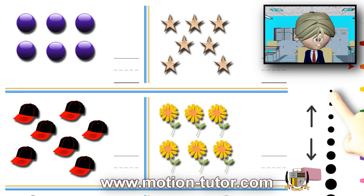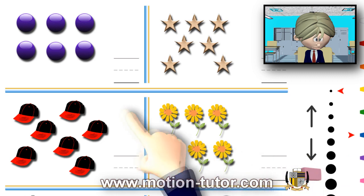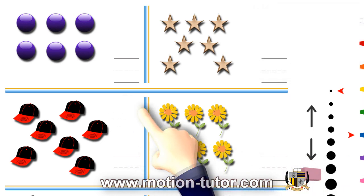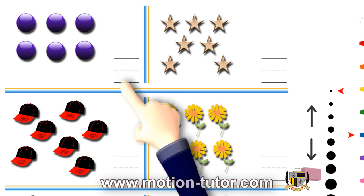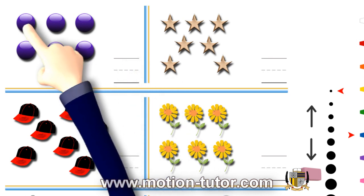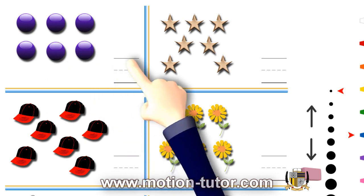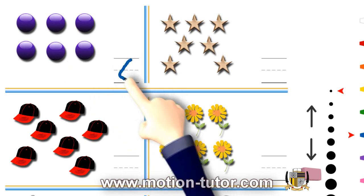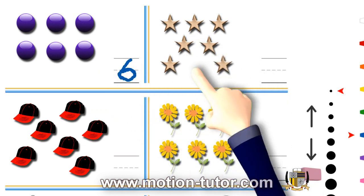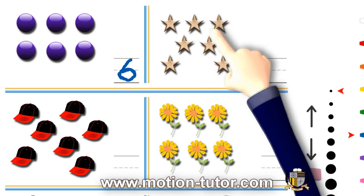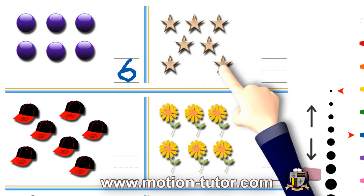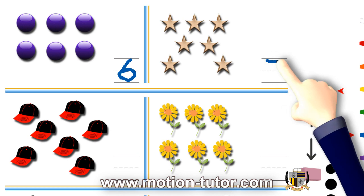Alright, so let's count the objects and then write the number in the space provided. How many marbles do we see here? 1, 2, 3, 4, 5, 6. So, 6. How many stars? 1, 2, 3, 4, 5, 6, 7. So, 7 stars.